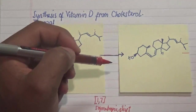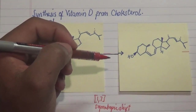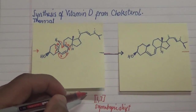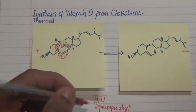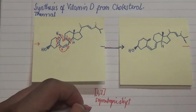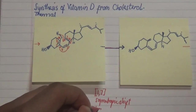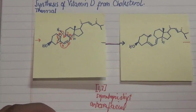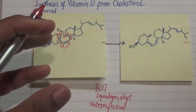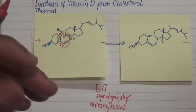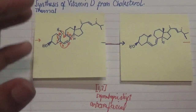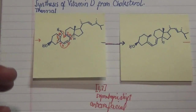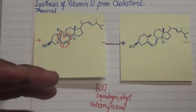You also need to realize that this is actually spontaneously occurring without any light, so this is a thermal antarafacial migration of our hydrogen atom. If we look at it at the molecular orbital level — as covered in our previous video — you can go back to that video to understand more of the orbital description of a 1,7-hydrogen shift.